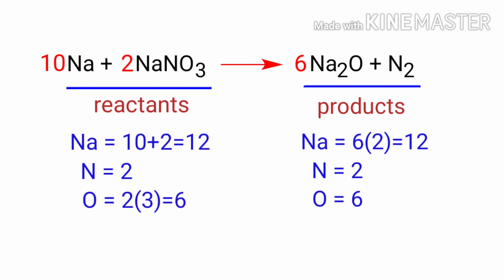The equation is now balanced. There are 12 sodium atoms, 2 nitrogen atoms, and 6 oxygen atoms on both sides.